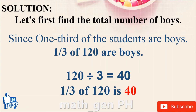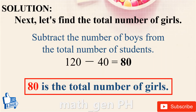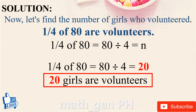Solution: First, find the total number of boys. One-third of 120 = 120 ÷ 3 = 40. So 40 are boys. Next, find the number of girls: 120 − 40 = 80 girls. Now find the number of girls who volunteered: one-fourth of 80 = 80 ÷ 4 = 20. 20 girls are volunteers. Answer: 20 girls.